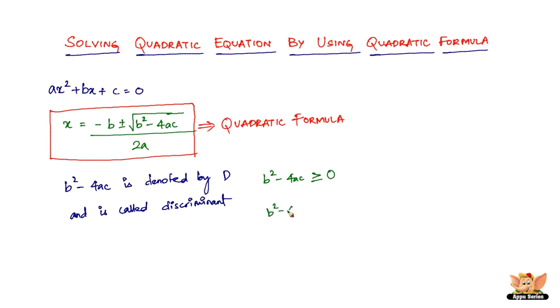If b squared minus 4ac is less than 0, then the equation will have no real roots. This is what you need to know.